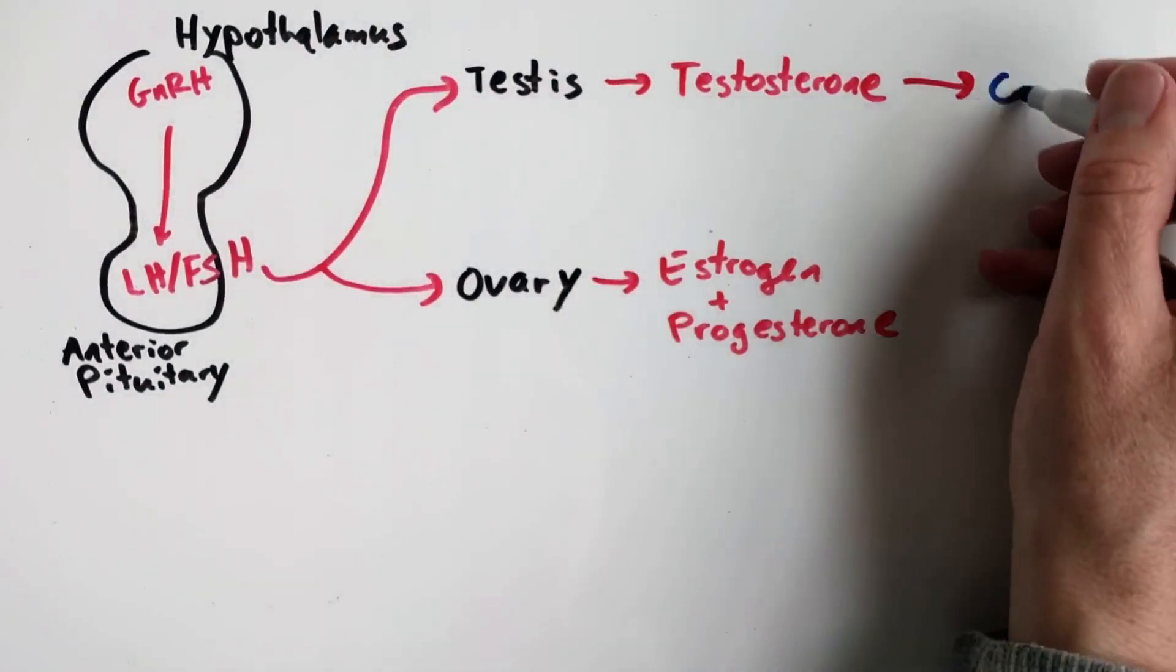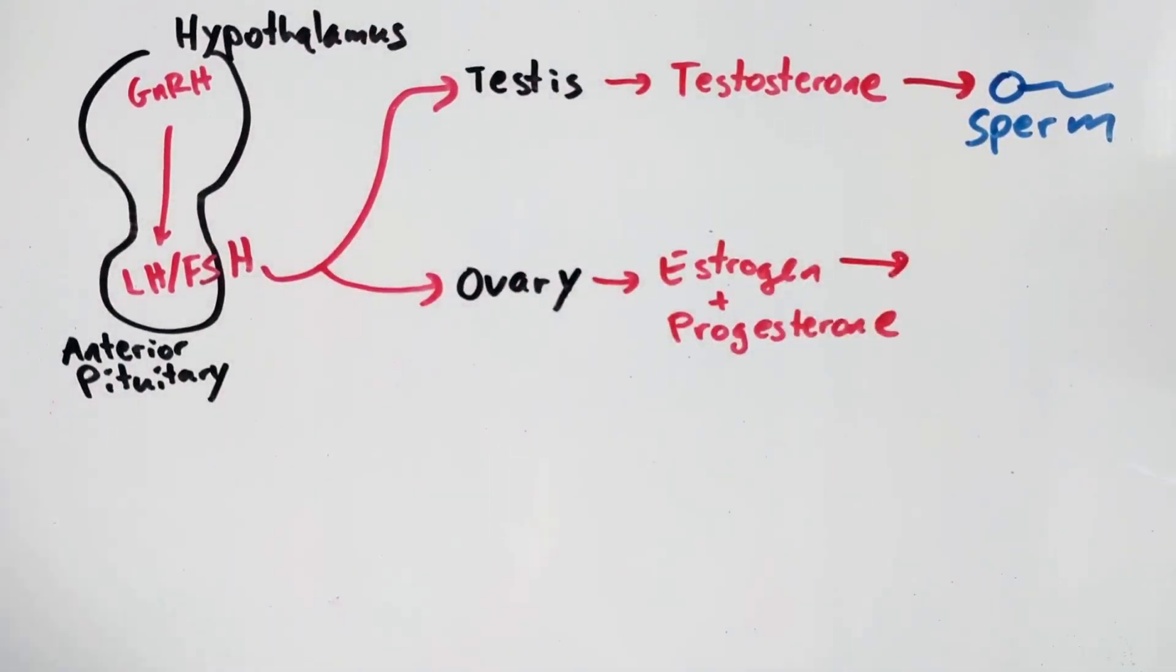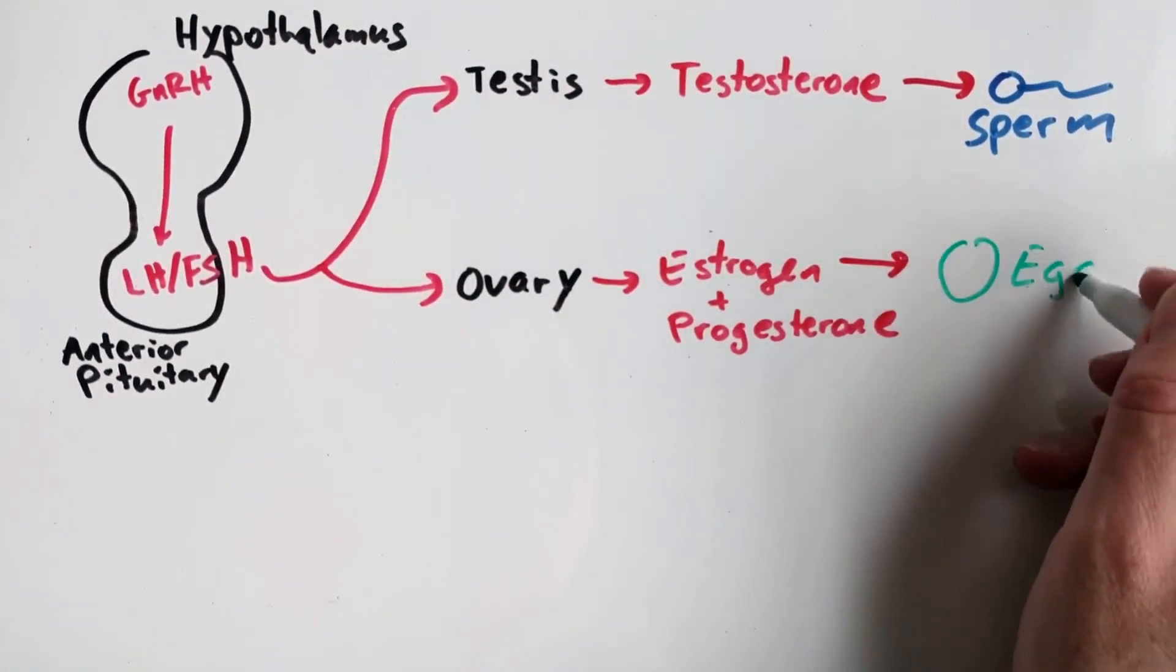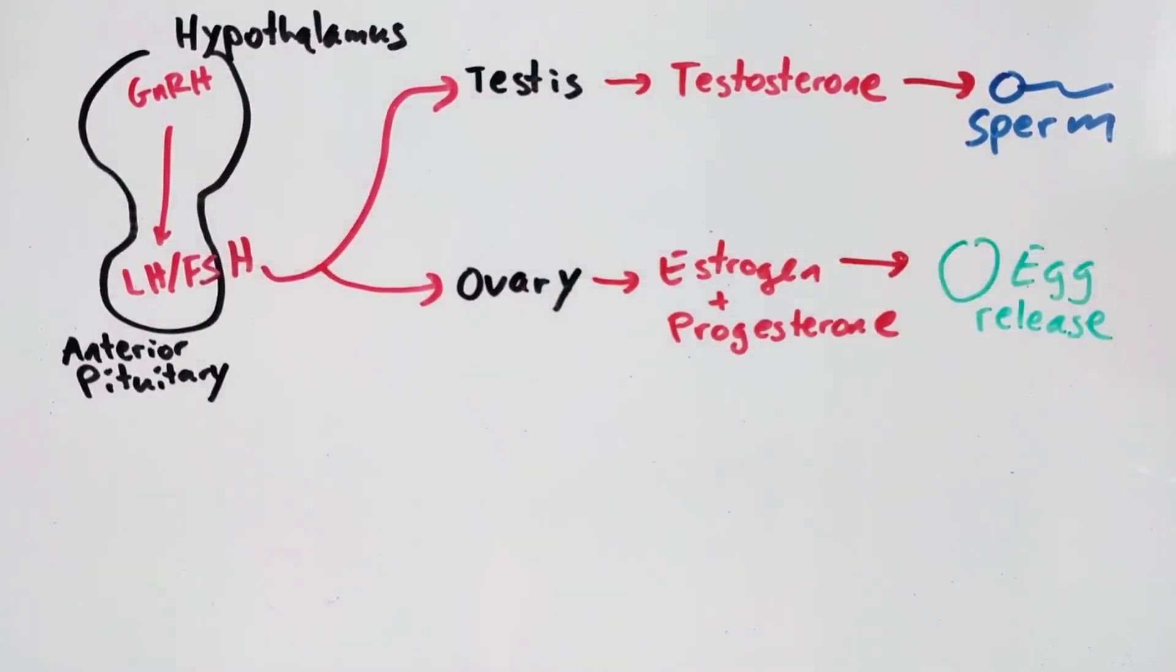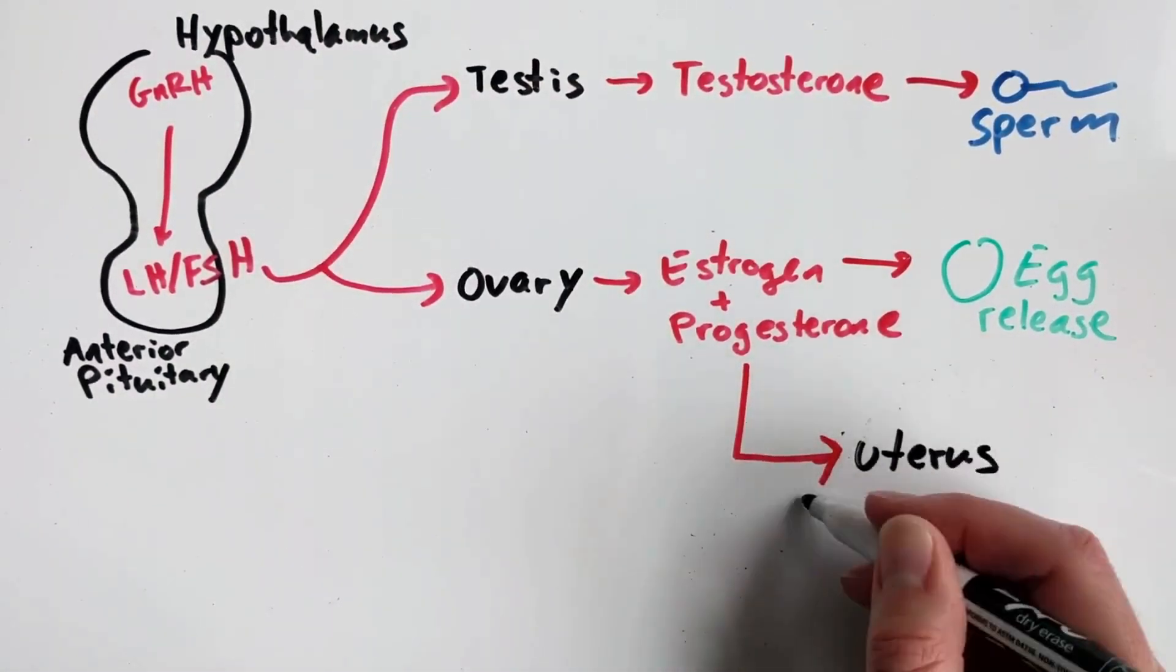Testosterone regulates the continuous production of sperm in the testes. Estrogen and progesterone, on the other hand, control the release of one egg each month from the ovary, and also regulate the lining in the uterus, known as the endometrium, to help it get ready for an embryo.